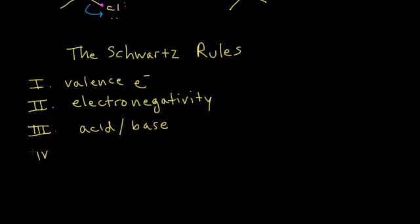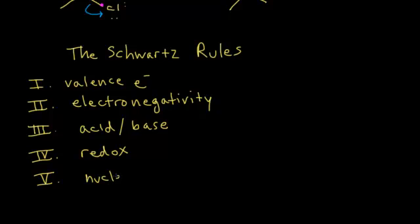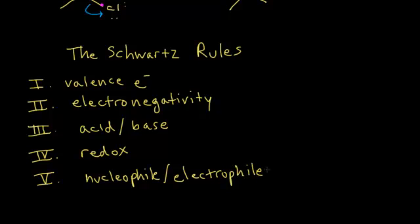The fourth Schwartz rule is redox chemistry — oxidation and reduction, assigning oxidation states, figuring out what's being oxidized and what's being reduced. And finally, the fifth Schwartz rule is what we just did in this video: the concept of nucleophiles and electrophiles. These five things are the most important things to understand as an undergraduate if you would like to do well in organic chemistry. So may the Schwartz be with you.